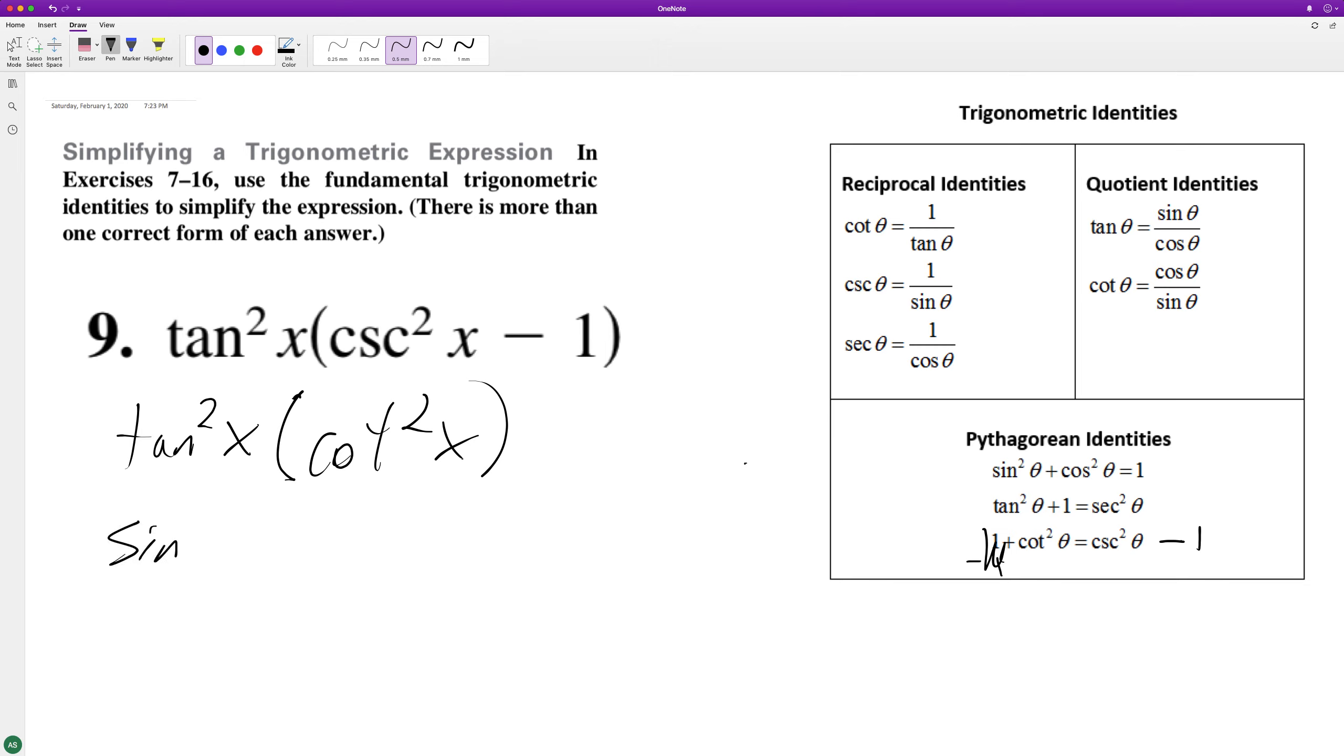So tangent squared x is sine squared x over cosine squared x, times cosine squared x over sine squared x. This is cotangent.